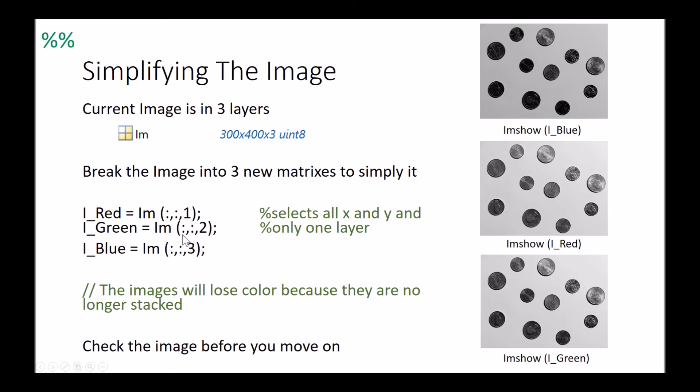I'm going to go in, grab my variable for my image, I'm going to do all my x, all my y, and then all my first layer and then my second and then my third. What that does, I lose the color in it but I get the same gradient of values within black and white. I can do an imshow for my blue, red, and green and see that they look similar but we're only seeing the values of the blue, the green, and the red.